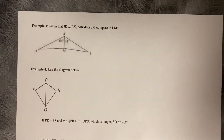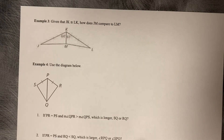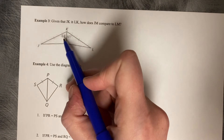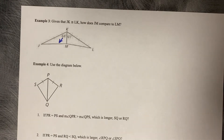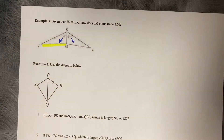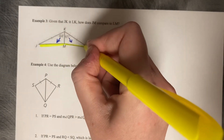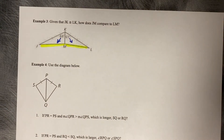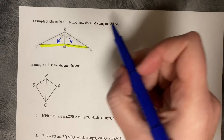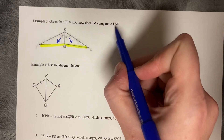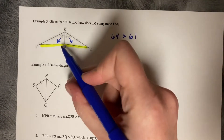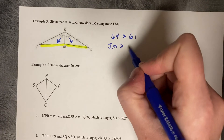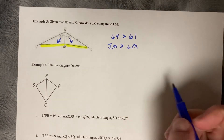Example three — this time we're going the opposite direction. We have 64 degrees and 61 degrees. 64 degrees corresponds to side JM, and 61 degrees corresponds to side ML. Using your eyes on this one is tough because they look about the same length, but because 64 is greater than 61, JM is greater than LM.